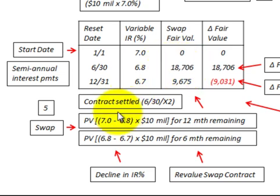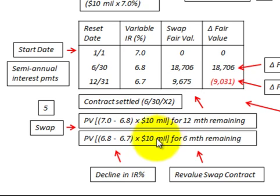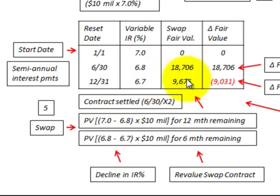Looking at the next period, December 31st, we take the difference between interest rates of 6.8% minus 6.7%, times $10 million. There are six months remaining in this contract from December 31st to June 30th. The present value for that period is $9,675.